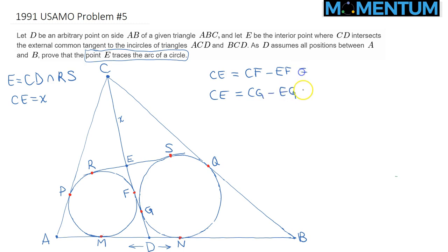Now let's see if we can further manipulate these. So CF minus EF. Well, CF is equal to CP by equal tangents. Does that make sense? So that's just CP minus. And how about EF? EF is equal to ER, again, by equal tangents.